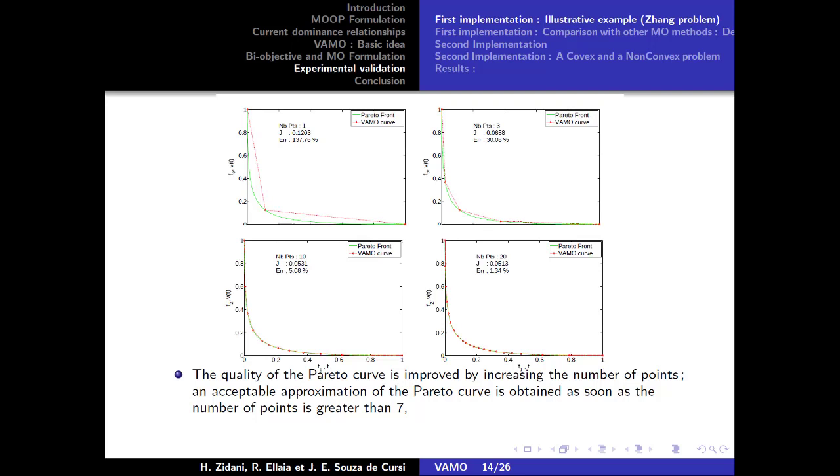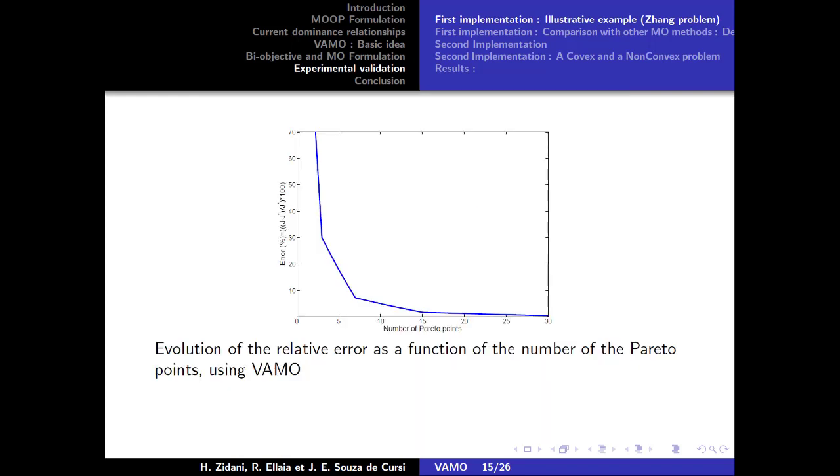And the number of 30 points is enough to adequately represent the Pareto front. The graph which represents the evolution of the relative error versus the required number of points shows that the error decreases rapidly between 1 and 10 points. From 60 points, this error tends to 0.